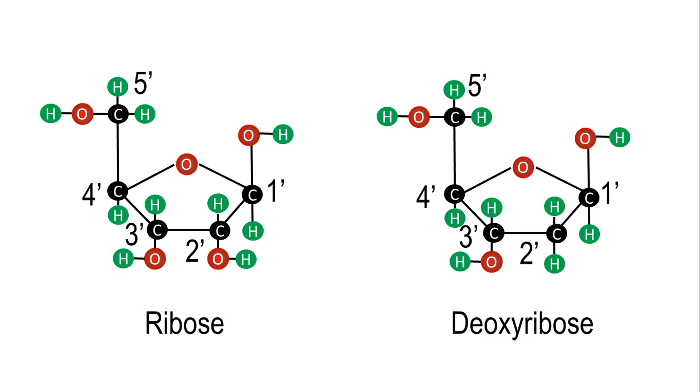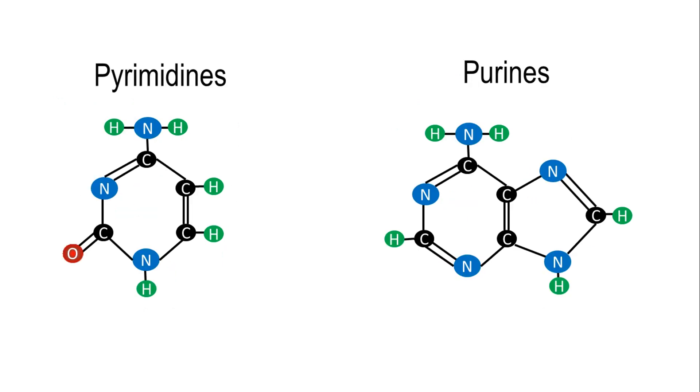Nitrogenous bases are the second part of a nucleotide and can be divided into two main groups: pyrimidines and purines.